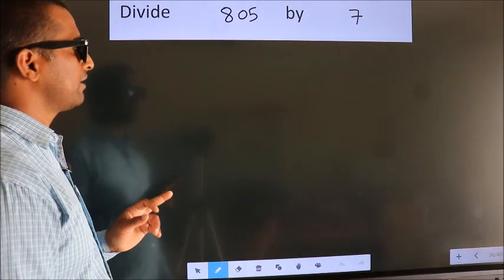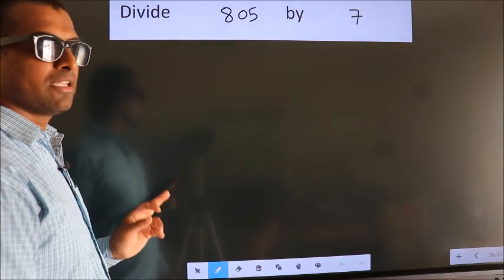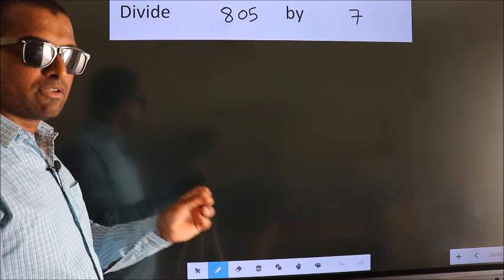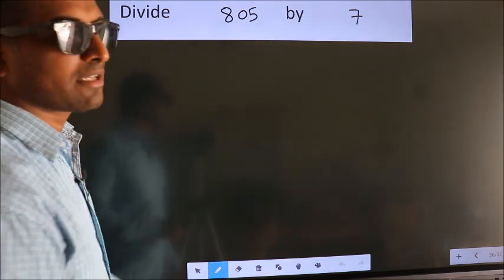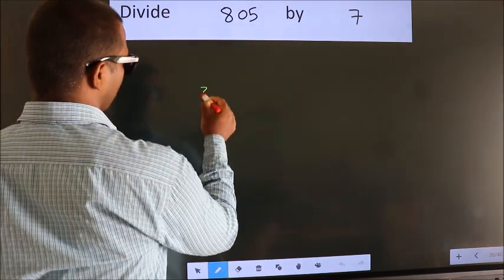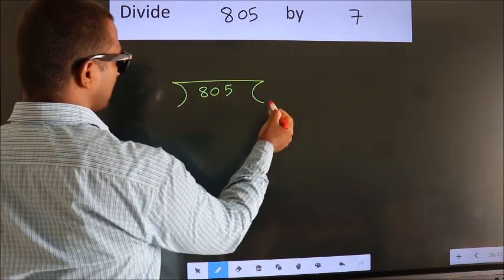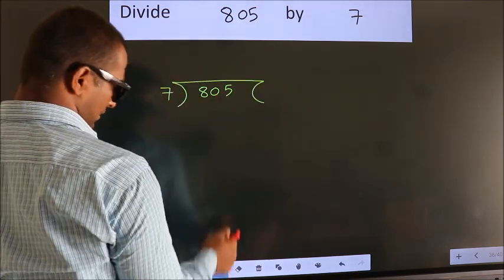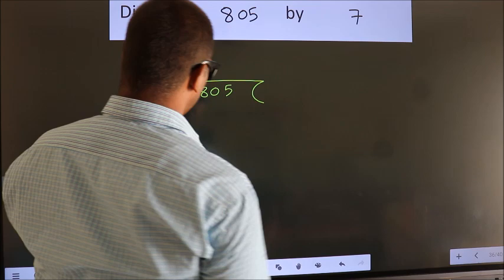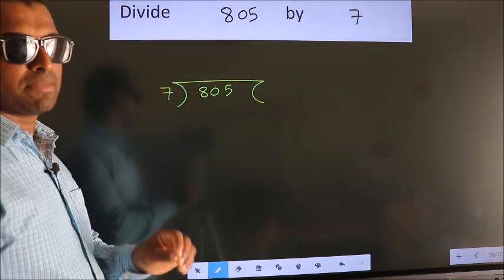Divide 805 by 7. To do this division, we should frame it in this way. 805 here, 7 here. This is your step 1.